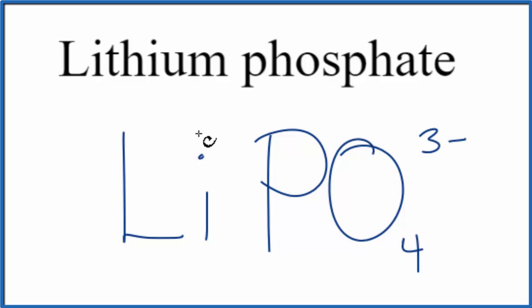Lithium on the periodic table is in group 1, so it has a 1-plus ionic charge. So we have a 1-plus and then the 3-minus.